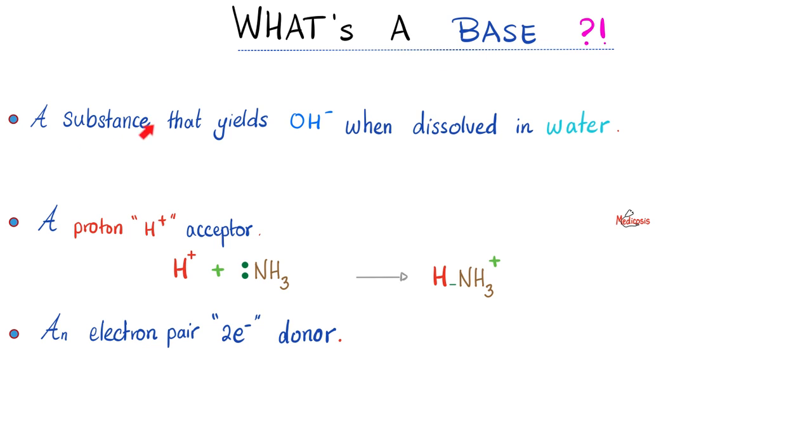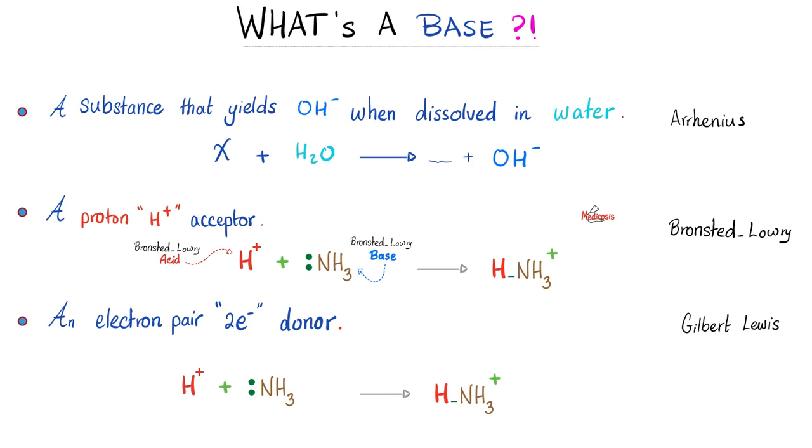Why is this, Medicosis? Because pH equals negative log hydrogen ion concentration. In other words, the higher the hydrogen ion concentration, the lower the pH. Pause and review. What's a base? The opposite. A substance that yields OH when dissolved in water. A proton acceptor. An electron pair donor.